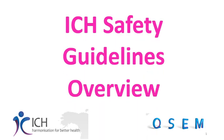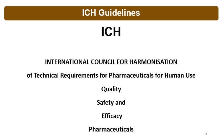Welcome to the video on ICH guidelines for safety. ICH, as we know, is the International Council for Harmonization. It is for the harmonization of technical requirements for pharmaceuticals for human use. The International Council for Harmonization has developed various guidelines to ensure the safety, quality, and efficacy of pharmaceuticals. ICH guidelines are designed for quality, safety, and efficacy of pharmaceuticals.